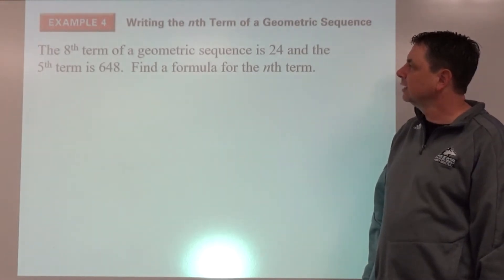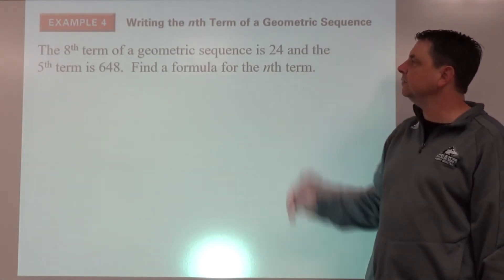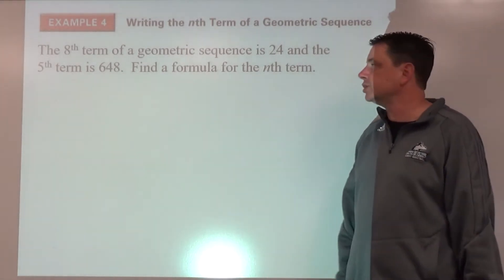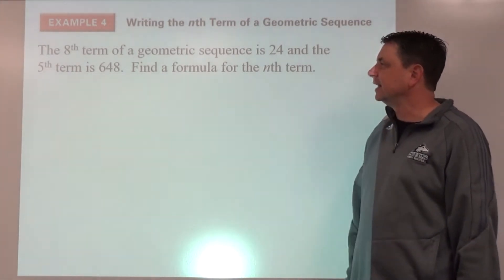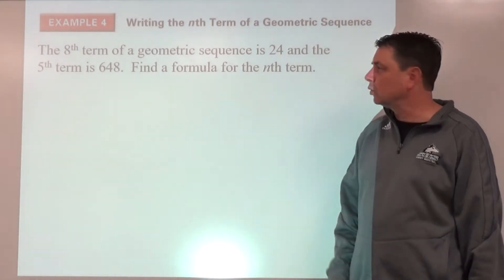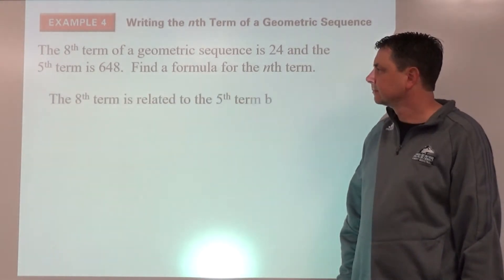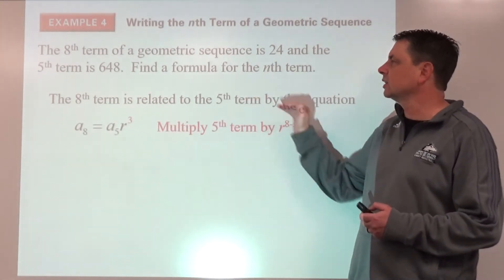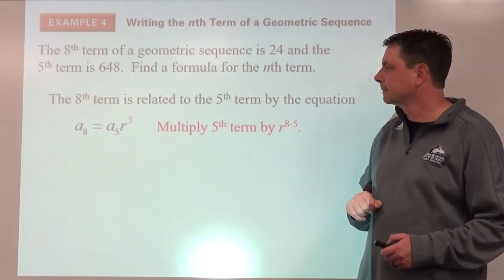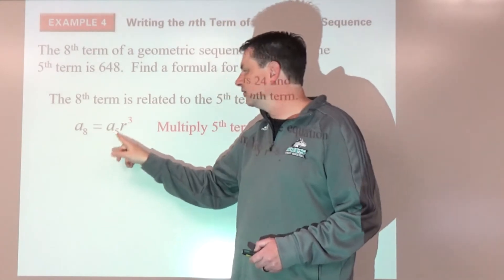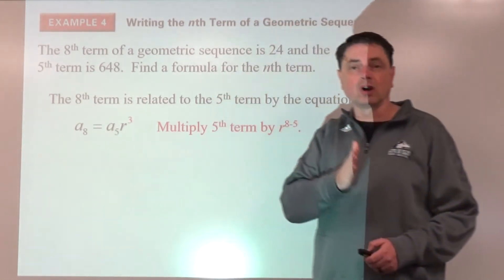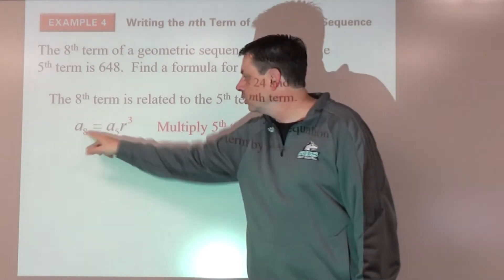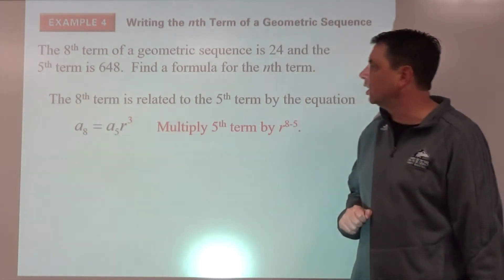Example four: the eighth term and fifth term are given; we don't know the first term or the common ratio, so we need to find both. We can relate the terms to each other — the eighth term is the fifth term times three more r's, or r cubed — and we know those values but not r.